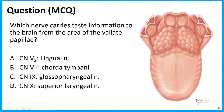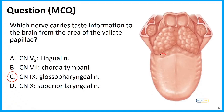Let's test ourselves. Which nerve carries taste information to the brain from the area of the vallate papillae? Is it the lingual nerve from V3, chorda tympani from facial nerve, the glossopharyngeal nerve, or the superior laryngeal nerve from vagus? The correct answer is the glossopharyngeal nerve. Remember that these vallate papillae are the boundary between the anterior two-thirds and the posterior one-third of the tongue.